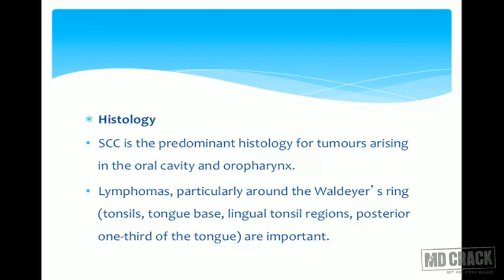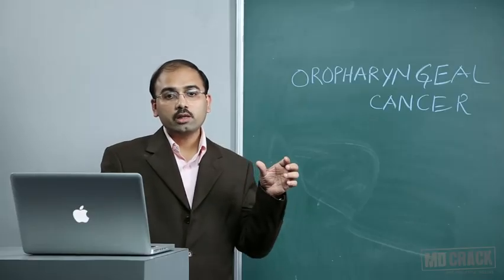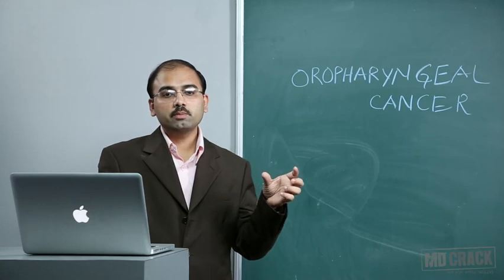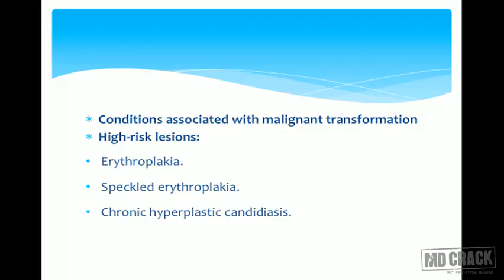Lymphoma is particularly associated with Waldeyer's ring, which consists of the tonsil, tongue base, lingual tonsil region, and posterior one-third of the tongue. Squamous cell carcinoma and lymphoma are the two tumors that occur in the oropharyngeal region. The components of Waldeyer's ring should be kept in mind, as you may be asked a question about them.